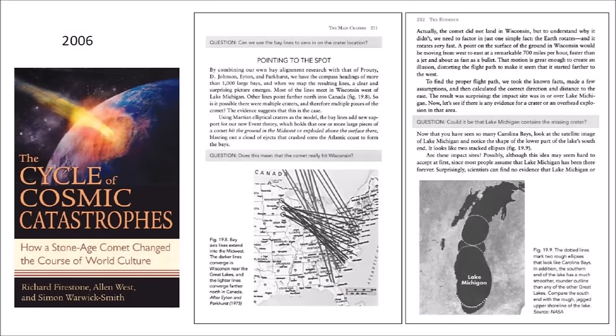The 2006 book 'The Cycle of Comet Catastrophes' by Richard Firestone, Alan West, and Simon Warwick Smith proposes that a giant dust bowl comet crashed into the ice of Hudson Bay and sent icy debris hurtling through the air. Within minutes, massive low-flying lumps crashed into the eastern seaboard, exploding into fireballs and gouging out the Carolina Bays. The authors combined bay alignment research from Prouty, Johnson, and Ayton and Parkhurst to produce compass headings for more than 1,000 large bays. Most of the lines meet in Wisconsin, west of Lake Michigan, and taking Earth's rotation into account, the convergence point corresponds to one or two impacts in Lake Michigan.